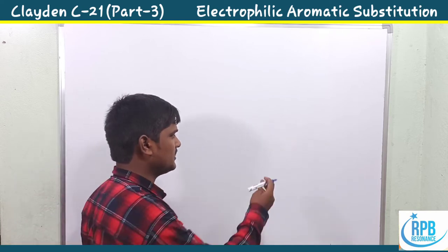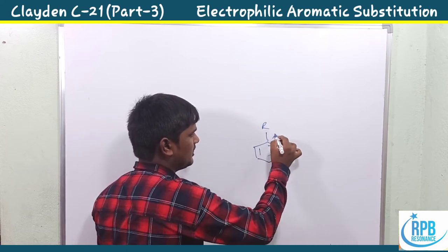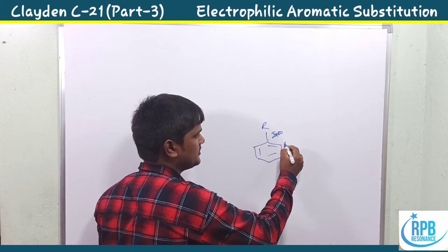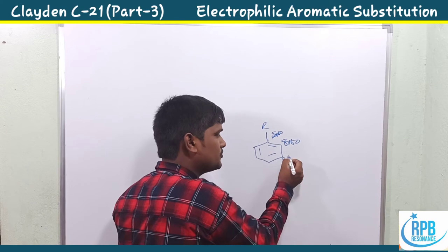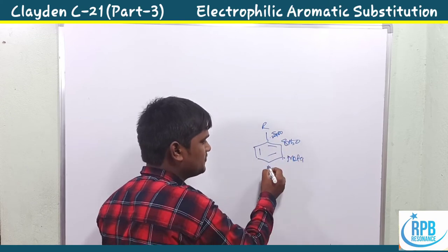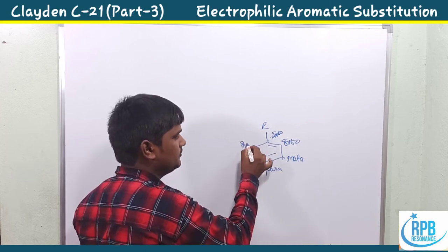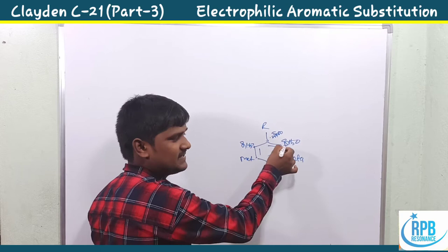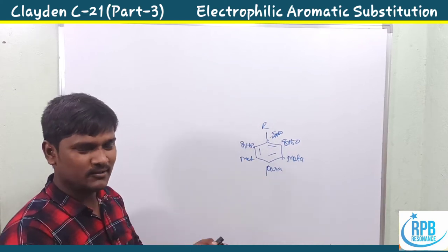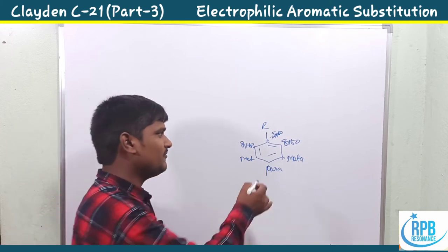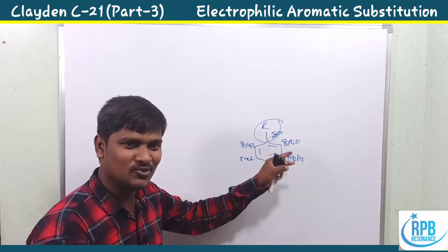We know that aromatic compounds have four positions. The substituent-attached position is ipso; the position adjacent to ipso is called ortho; the alternative position is called meta; and the exact opposite position is called para. So: ipso, adjacent is ortho, alternative is meta, opposite is para — giving us four types based on where substitution occurs.